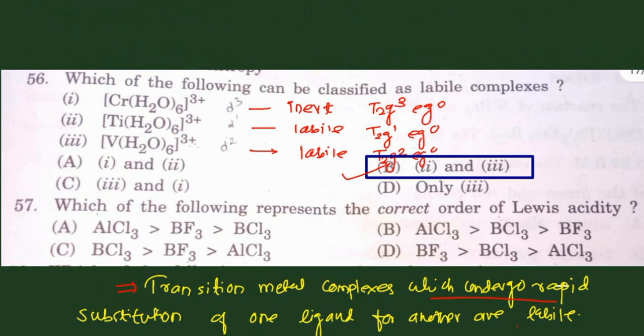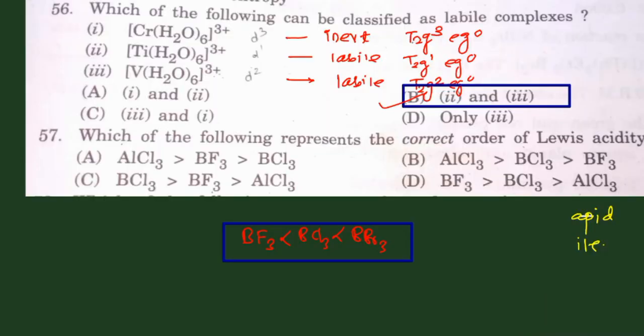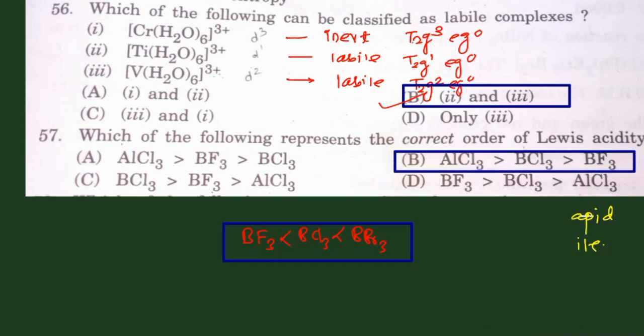The next question on acidity order of boron halides: boron has a vacant 2p orbital and acts as a Lewis acid, with backbonding from halogen lone pairs reducing acidity. The order is BF3 < BCl3 < BBr3 due to decreasing backbonding efficiency. AlCl3 is more acidic than any boron halide. So the full order is AlCl3 > BBr3 > BCl3 > BF3. The correct option is B.